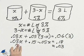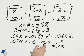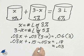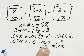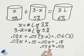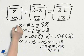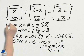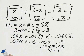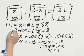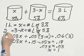0.08X minus 0.05X is 0.03X, dividing X equals 1, that would be 1 liter. And 3 minus X would be 2 liters.